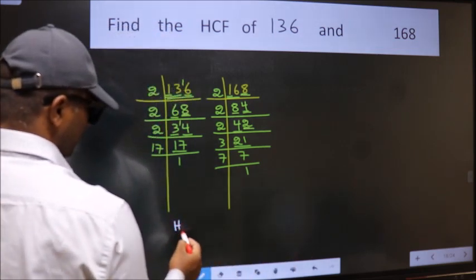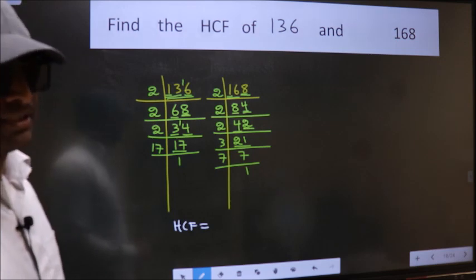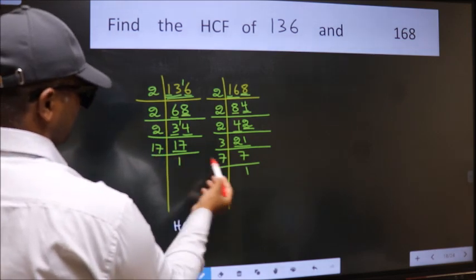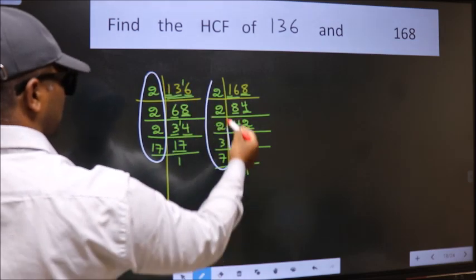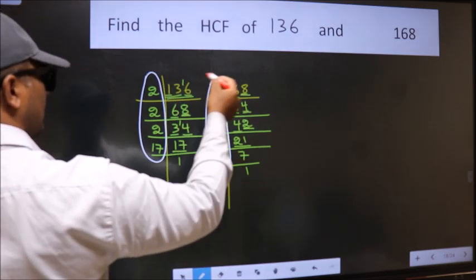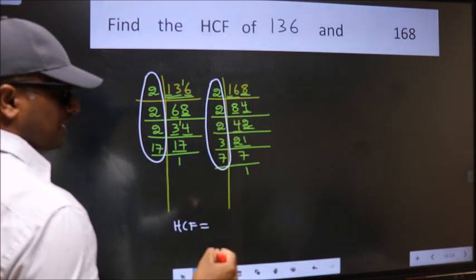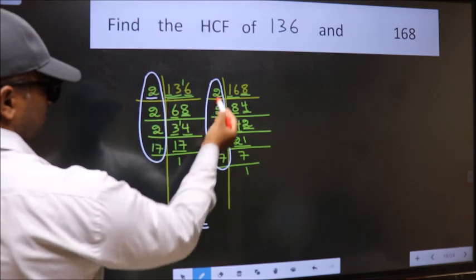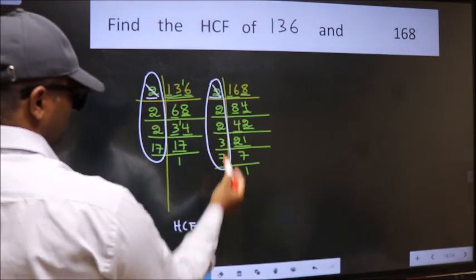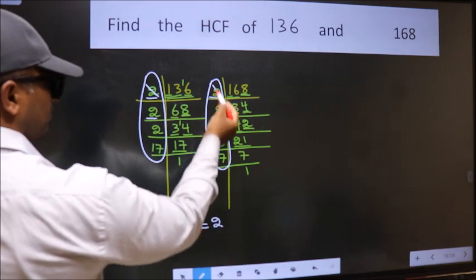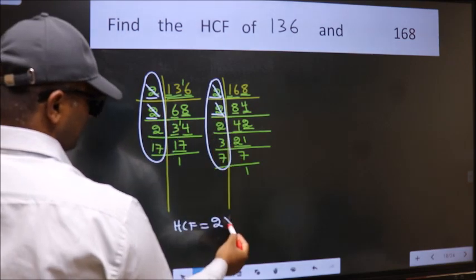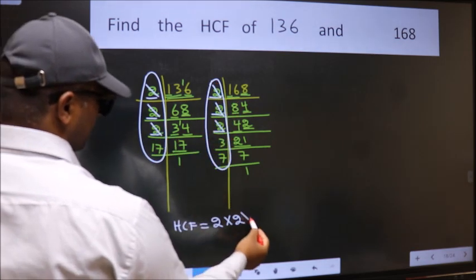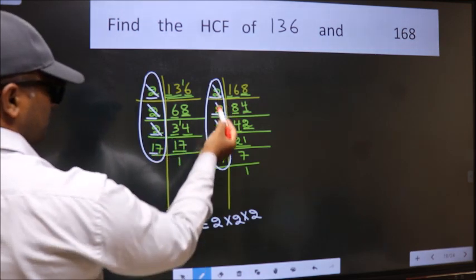Therefore, our HCF is the product of the numbers which are present in both factorizations. That is the numbers common to both 136 and 168. Starting with the number 2 — do we have 2 here? Yes. So mark 2. Next number 2 — do we have 2 here? Yes. So mark 2. Next number 2 — do we have 2 here? Yes. So mark 2. Next number 17 — do we have 17 here? No.